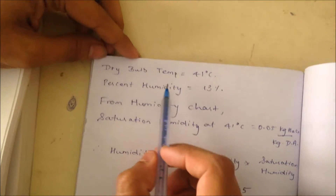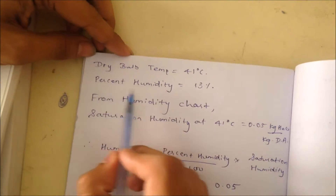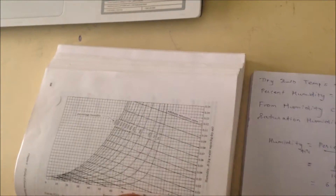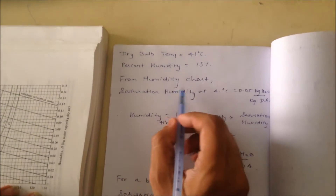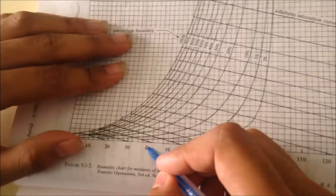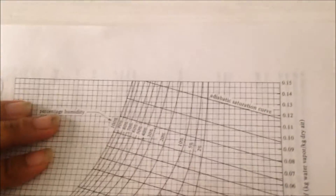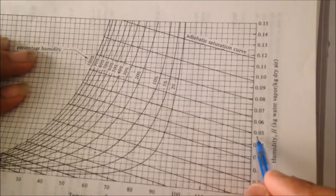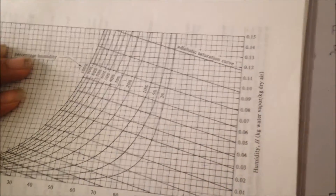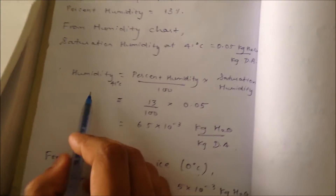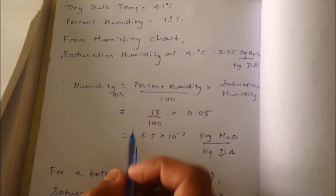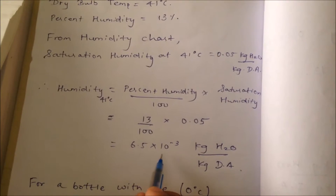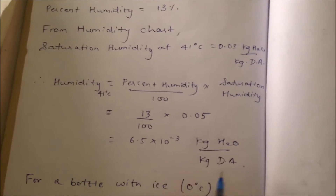The dry bulb temperature is 41 degrees centigrade and percentage humidity is 13%. We can find the saturation humidity at 41 degrees centigrade from the humidity chart. At 40 degrees centigrade, the corresponding saturation humidity value is 0.05 kg of water vapor per kg of dry air. From that, we can find the humidity at 41 degrees centigrade by this formula. This was calculated to be 6.5 × 10⁻³ kg of water vapor per kg of dry air.